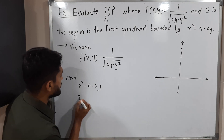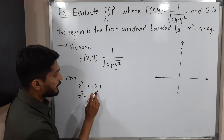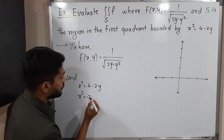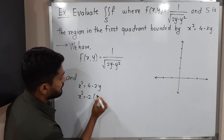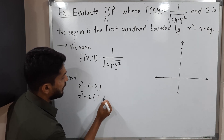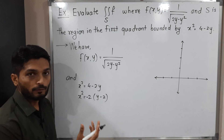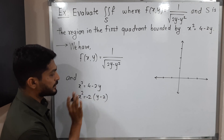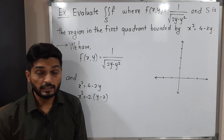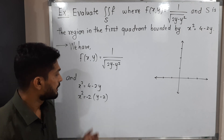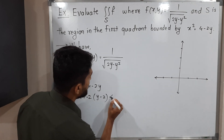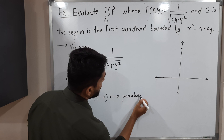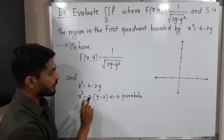Let us write it in its standard form. x² = −2(y − 2). If you expand the bracket you will get the same: −2y + 4. I have written the parabola equation in its standard form. The power of y is 1, which means the axis of symmetry is the y-axis.